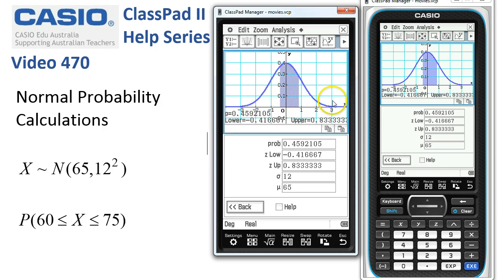We've got the standardized normal distribution here, so you can see the scale is standard scores: 1, 2, 3 above the mean and 1, 2, 3 below. So the displayed lower and upper are actually from the standardized values of 60 and 75.